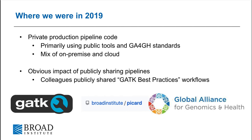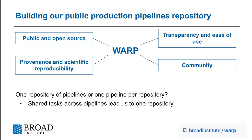At that time, colleagues had been copying some of the cloud production pipelines into a public repository for GATK best practices pipelines. This made clear the obvious impact of publicly sharing pipelines. We learned the value of documentation and support, building community, and what it takes for ease of use. We developed a vision of a single repository of production pipelines that is public and open source, enables provenance and scientific reproducibility, is transparent and easy to use, and supports an open source community around pipelines.